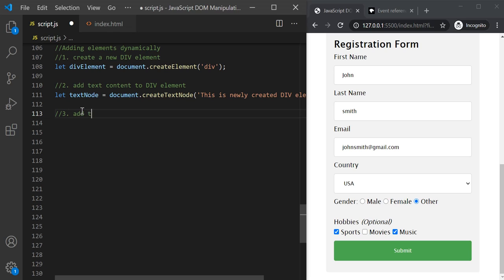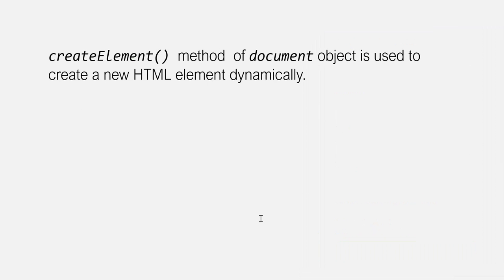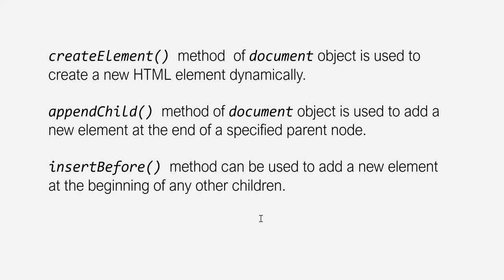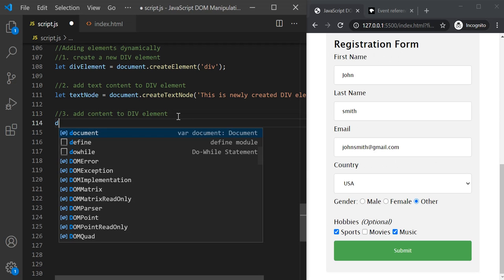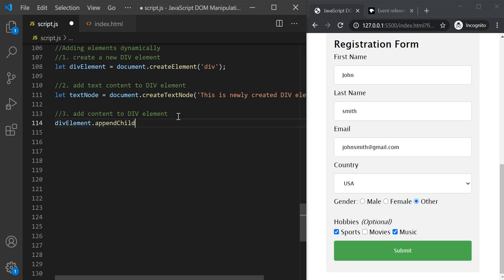To add content to an existing element, we have two methods: appendChild and insertBefore. The appendChild method adds a new element at the end of a specified parent node. If the parent node has three child elements, appendChild will add the new element after those three child elements. The insertBefore method will add the new element before any other child element. So let's use appendChild to add the text content to our newly created div — divElement.appendChild — and we want to add this textNode child to this div element.